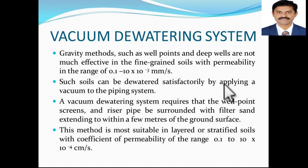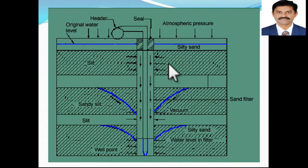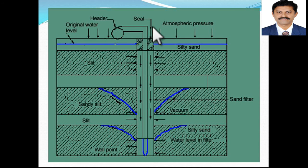Vacuum dewatering systems are used because gravity methods such as well point systems are not effective for low permeable soil. This method is most suitable for layered or stratified soil with a coefficient of permeability in the range of 0.1 to 10 raised to minus 4 centimeters per second — very low permeable soils. A vacuum is formed in the drawdown pipe or well so that water is sucked out.